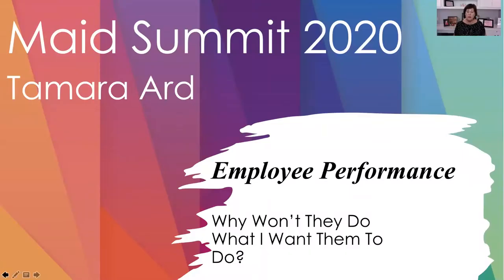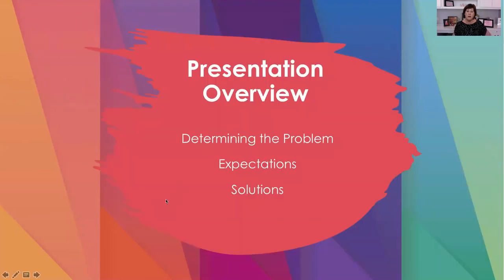Today we're going to talk about employee performance and why those pesky employees won't do what you want them to do. I know that I have worked on employee performance for a long time and made every mistake in the book. I'm going to give you some tools to think through when you're working with people. First, we'll talk about how to determine the problem with your employee, then expectations and how you communicate them, and finally some solutions to these problems.